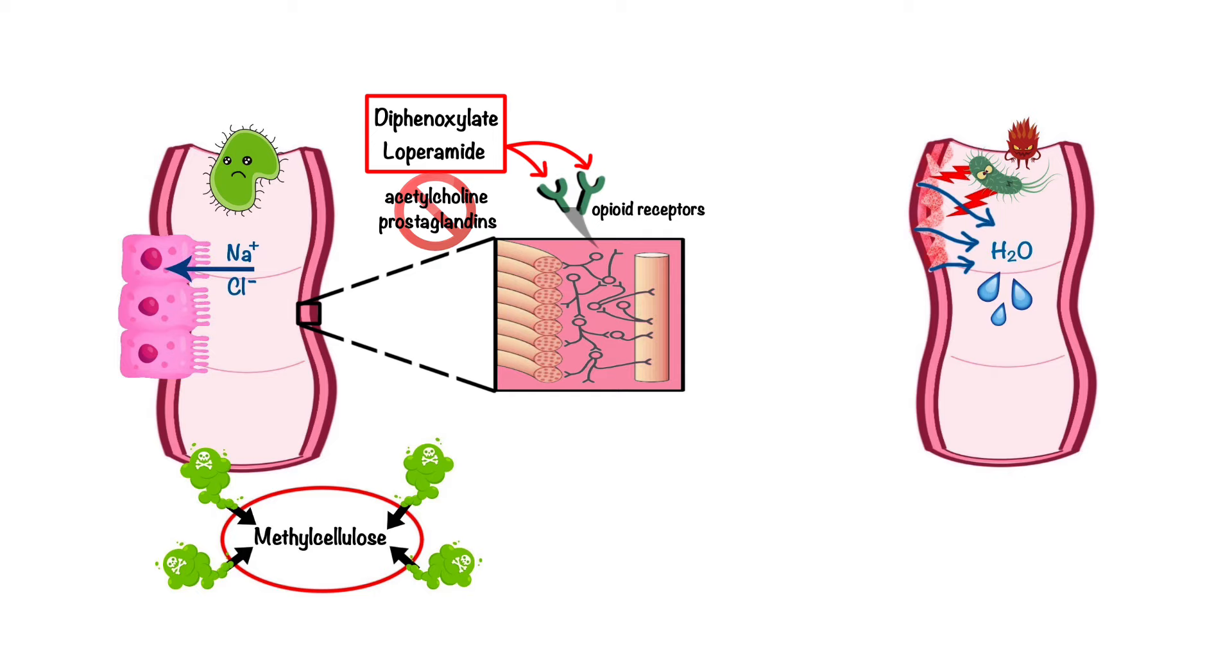One notable difference between these two agents is their ability to cross the blood-brain barrier. Loperamide cannot cross the blood-brain barrier to cause CNS effects. Therefore, it has low abuse potential. In contrast, diphenoxylate can cross the blood-brain barrier, so it is usually combined with atropine to prevent drug abuse.